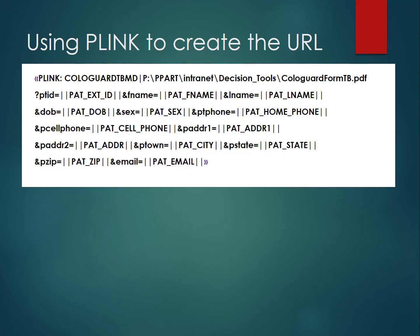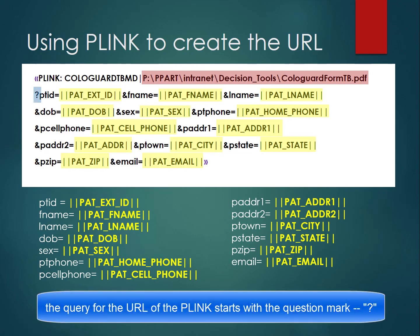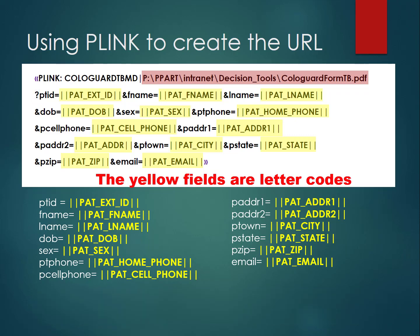Creating a PLINK might seem daunting, but it really isn't that complicated. Before the colored area is the PLINK command and the identified PLINK called Cologuard TBMD. After the pipe is the actual location of the document in a subdirectory off of PPART. Then you add the different parts of the query which pull information from that patient's chart — including patient external ID, first name, last name, date of birth, sex, home phone, cell phone, first address, second address, patient city, state, zip code, and email.